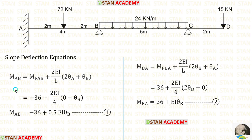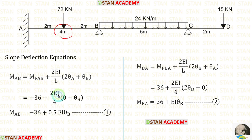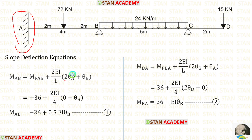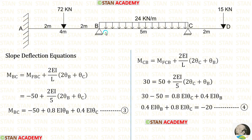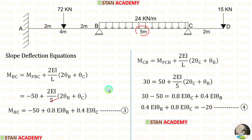Now, let us form the slope deflection equations. First, for span AB: applying the fixed end moments and the length of 4 m. At point A there is a fixed support, so theta A equals 0. This gives us two slope deflection equations for span AB. Then for span BC, applying the fixed end moments and the length of 5 m, we form the slope deflection equations for MBC and MCB.